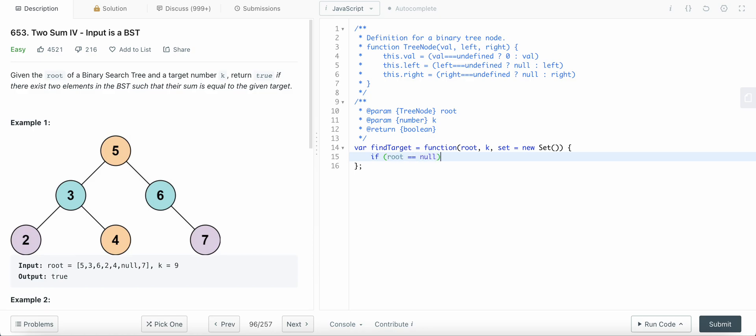If root is null we're just gonna return false, and if nothing satisfies we're just gonna return false. And then here I'm going to write my code now. So we'll first check the set if the complement of the value exists in the set or not.